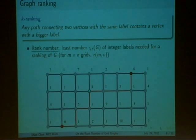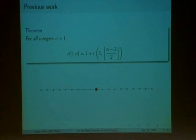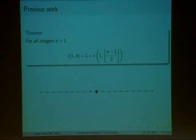An obvious question that we can ask is, what is the least number of integer labels we need in order for this ranking condition to be satisfied? It turns out that even for grid graphs, this problem is actually considerably hard. Previously, the rank number has been completely characterized for 1 by n, 2 by n, and 3 by n grid graphs.